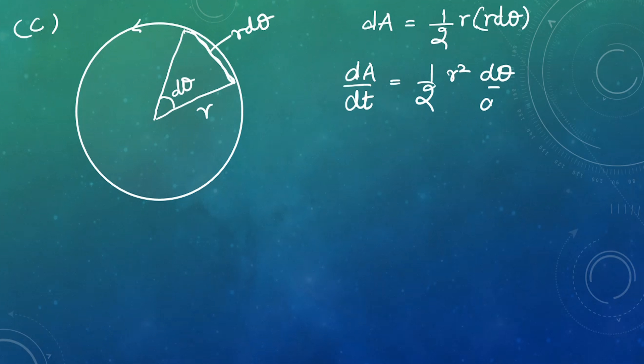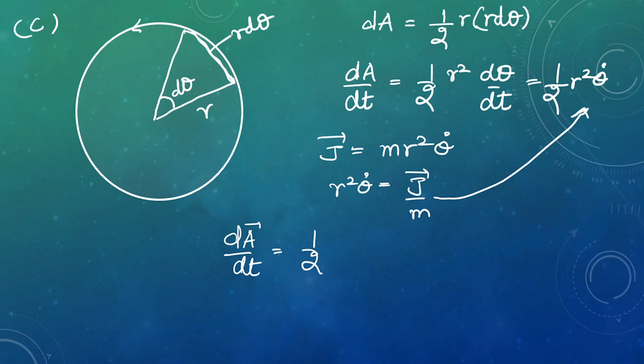This comes out like half r squared theta dot. We know the angular momentum is m r squared theta dot. This r squared theta dot can be written as J over m. So we will substitute this expression into here. Area change with time can be written as half J over m, so this is J over 2m.